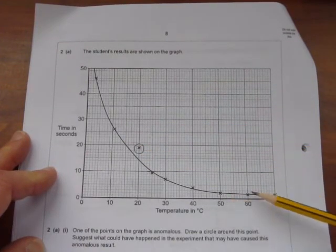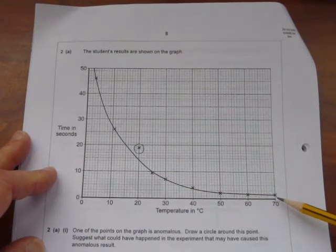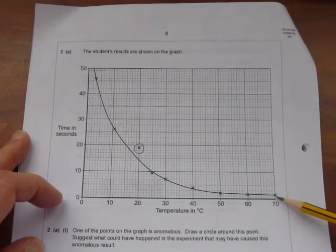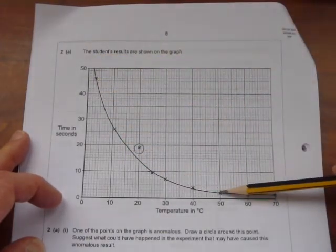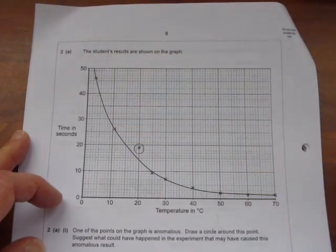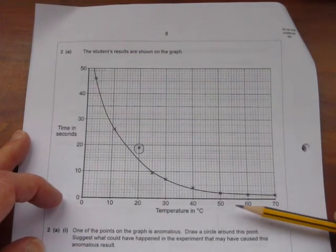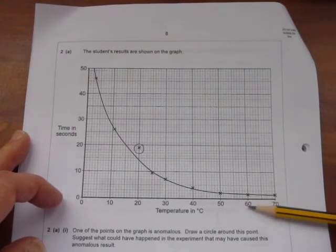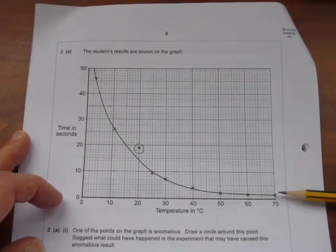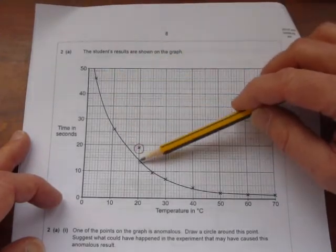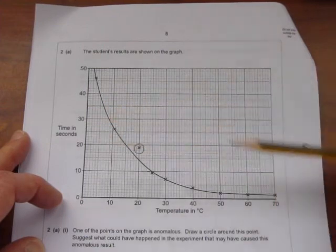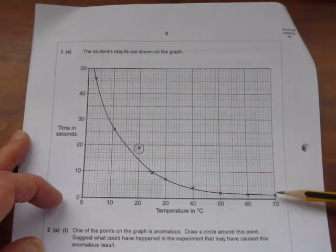But between fifty and sixty, and between sixty and seventy, there's hardly any change in the time taken. For one mark, you'll say yes, as temperature gets higher, the time it takes to react gets less. But for a second mark, you could say, at higher temperatures, the difference in time taken is very small, or is much less. Whereas at low temperatures, the difference in time taken is much bigger. There's a big fall there. There's hardly any fall at all here. And that's how you can be sure of scoring two marks.